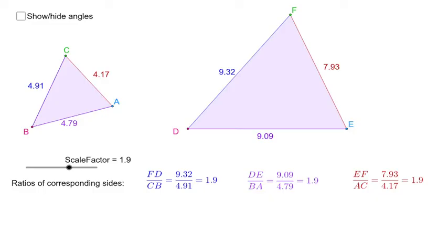For example, FD divided by CD. FD divided by CD is 9.32 divided by 4.91. It equals to 1.9.